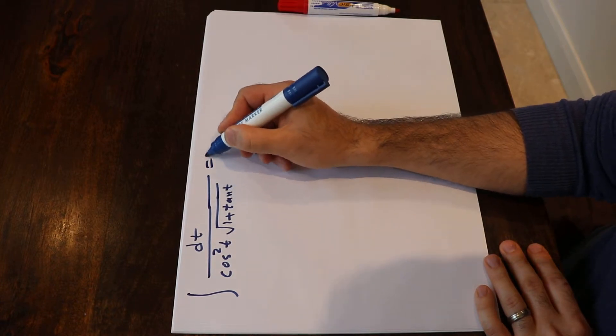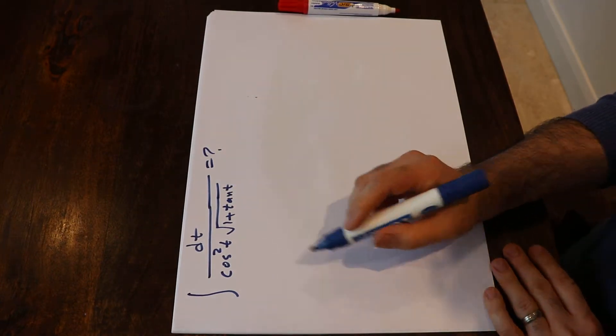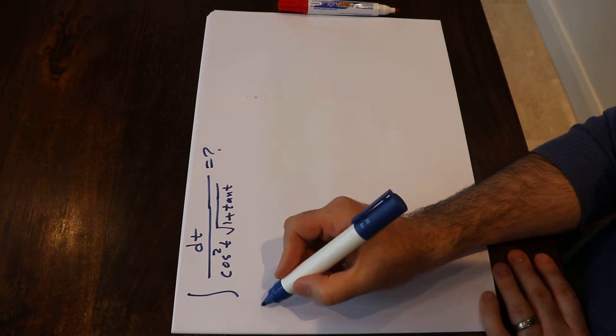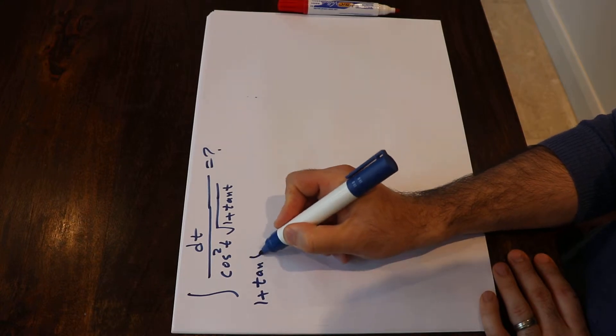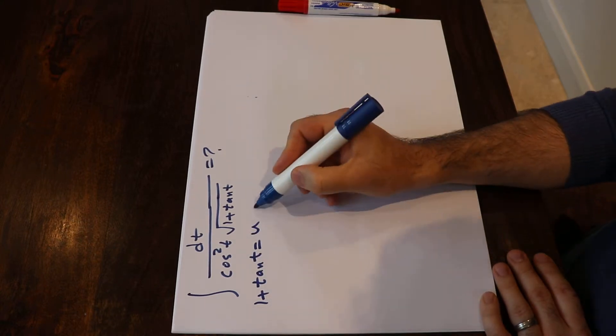To solve this integral you need to use the substitution rule. In other words, if you define 1 plus tangent t as u and if you take the derivative from each side of this equation...